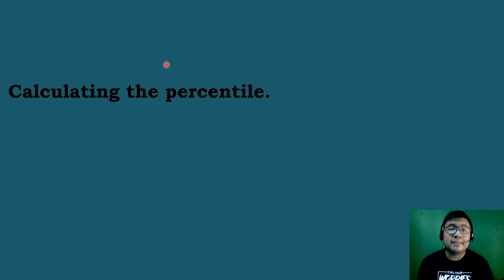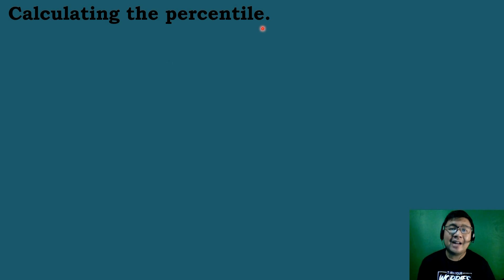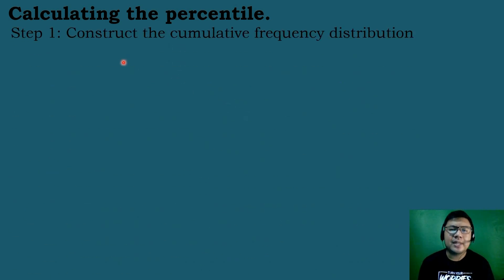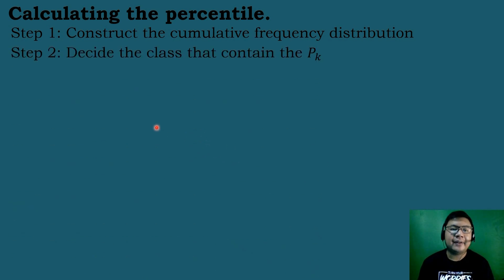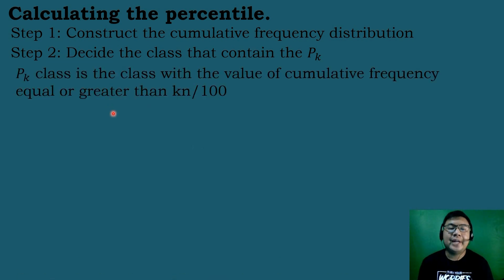These are the steps that we need to consider to calculate the percentile for the group data. The first step is we need to construct the cumulative frequency distribution table. After that, we need to decide the class that contains the percentile class. The percentile class is the class with the value of cumulative frequency which is equal or greater than k times n divided by 100.